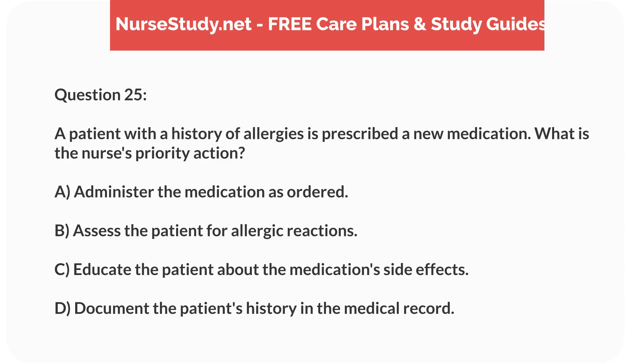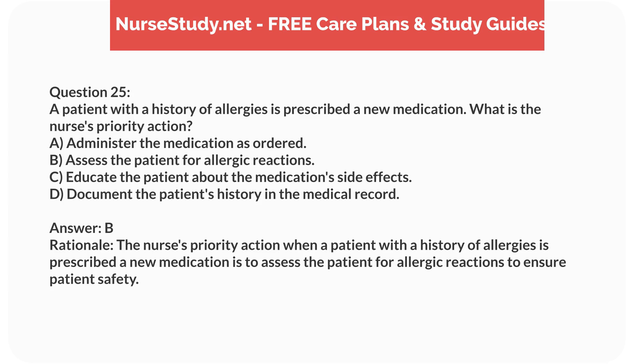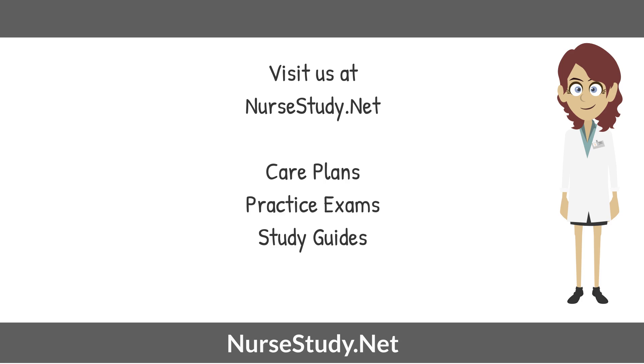Question 25. A patient with a history of allergies is prescribed a new medication. What is the nurse's priority action? A. Administer the medication as ordered. B. Assess the patient for allergic reactions. C. Educate the patient about the medication's side effects. D. Document the patient's history in the medical record. Answer: B. Rationale: The nurse's priority action when a patient with a history of allergies is prescribed a new medication is to assess the patient for allergic reactions to ensure patient safety. Visit Nursestudy.net for more nursing practice exams, care plans, and study guides.